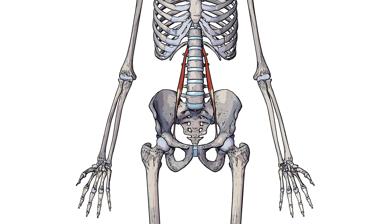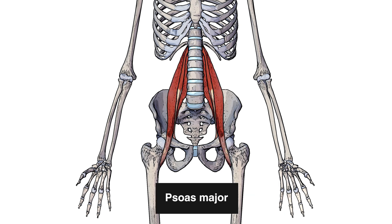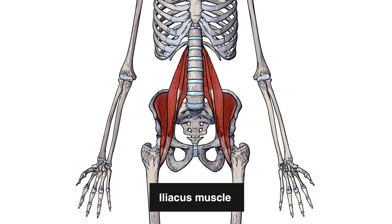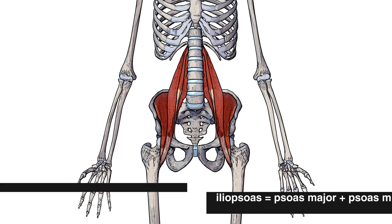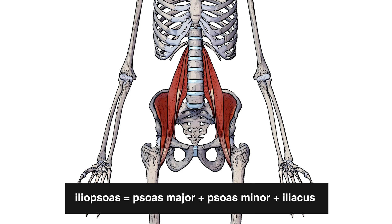Pictured here we can see the psoas minor muscle in isolation. The psoas minor muscle is one of the three iliopsoas muscles. The other two are the psoas major muscle and the iliacus muscle. A difference you'll notice between these three muscles is that the psoas major and the iliacus both cross over the hip joint, whereas the psoas minor is connecting onto the hip here. This is why some sources don't include the psoas minor as part of the iliopsoas muscle group, but most research papers and textbooks include it, so I'm going to include it in this video as well.